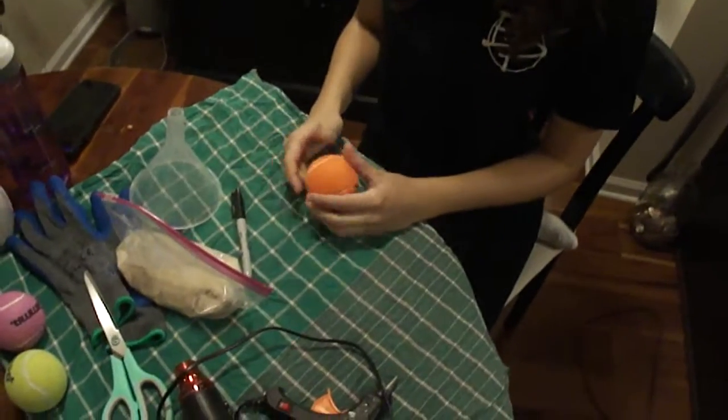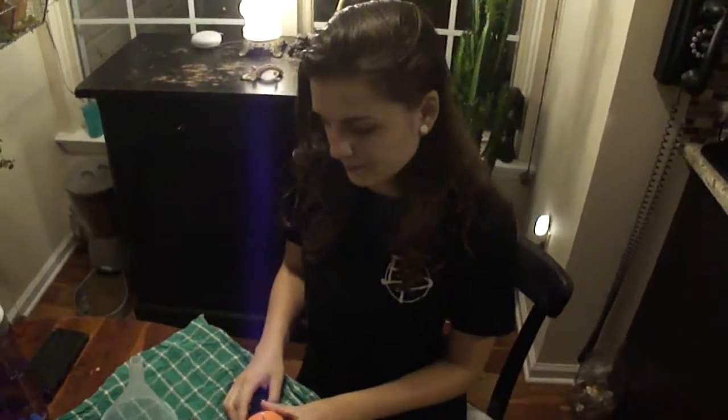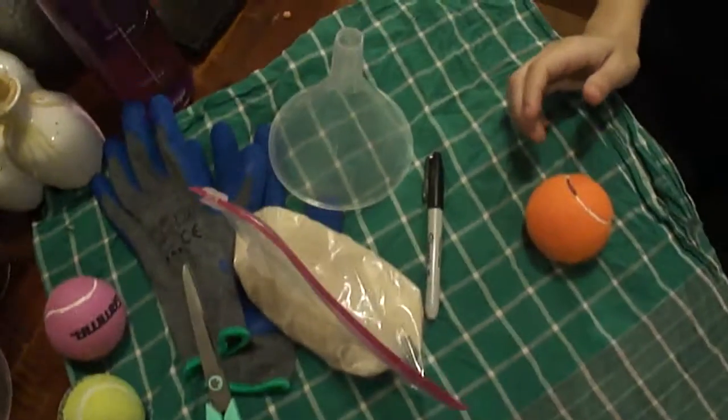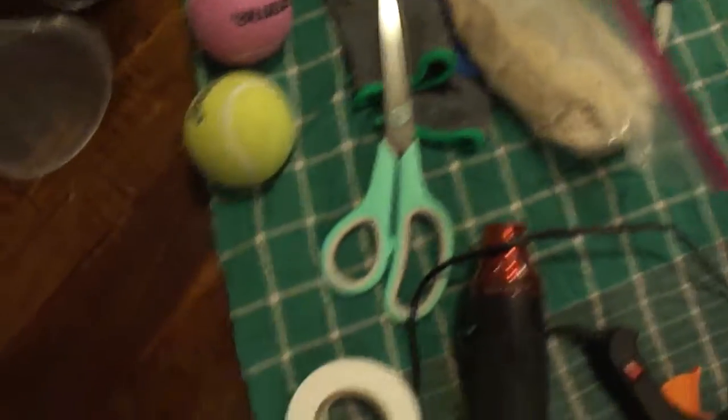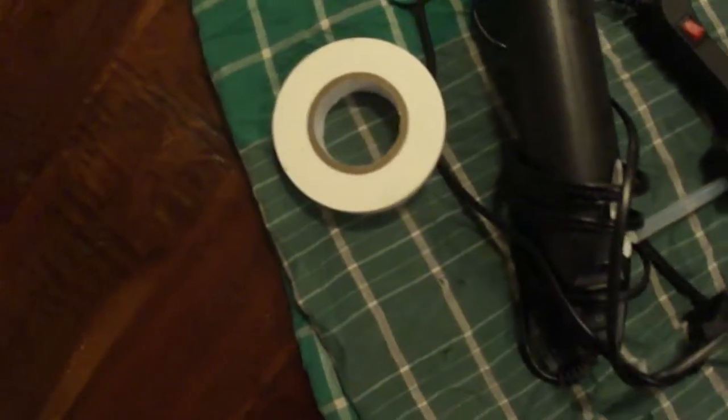Okay, so we have here a tennis ball, a person, sand, a funnel, a sharpie, gloves, scissors with a sharp tip, the heat gun, the glue gun, and the tape.